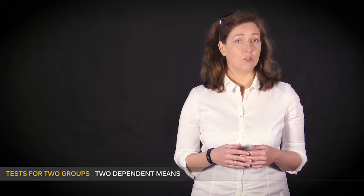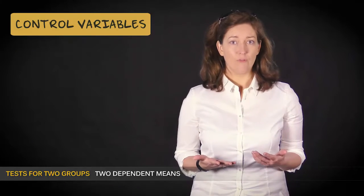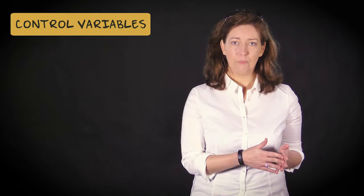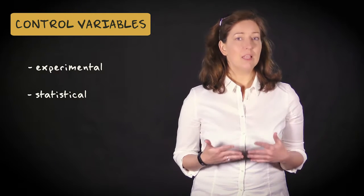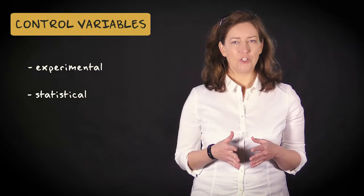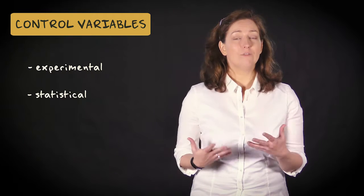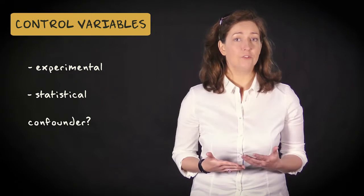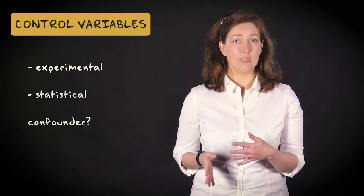In this video I'll discuss how we can take into account the effect of a control variable on the relation between the independent and the dependent variable. We'll look at experimental and statistical control of possibly confounding variables and see how to check if a control variable is in fact a confounder and provides an alternative explanation for an effect on the dependent variable.